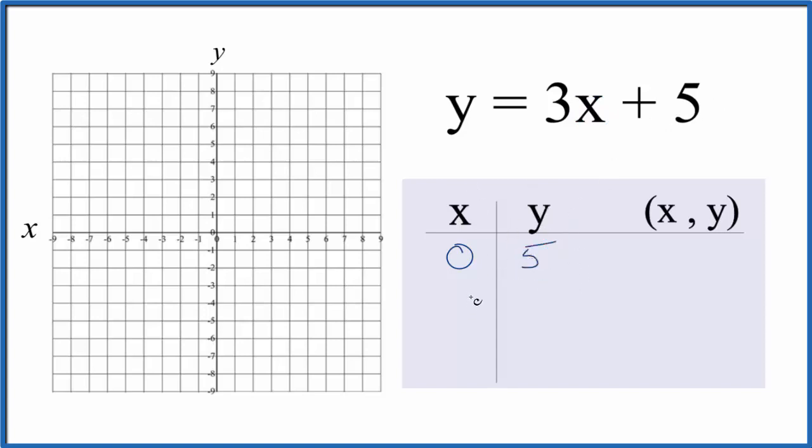You can choose any values for x and they'll give you a value for y, and that point will be on our line for y = 3x + 5, but it's helpful if we choose values that fit here on the graph paper.